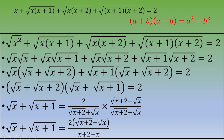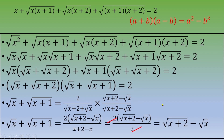Since x+2−x = 2, we simplify: 2(√(x+2) − √x) / 2, and the 2's cancel. So we get √x + √(x+1) = √(x+2) − √x.